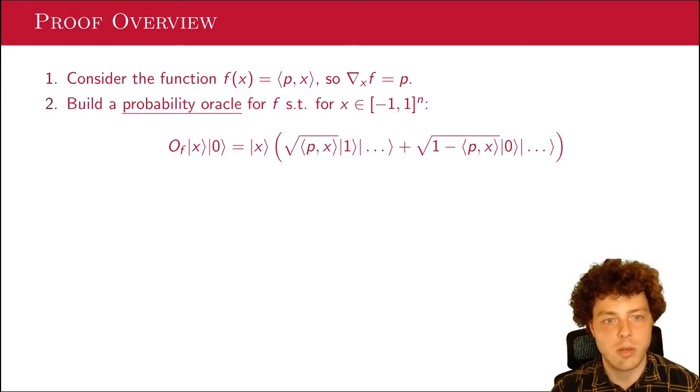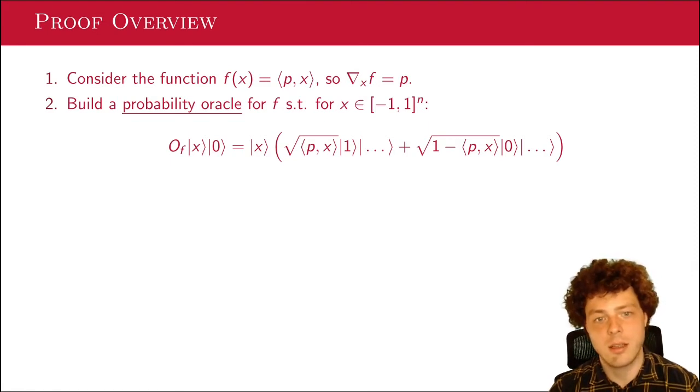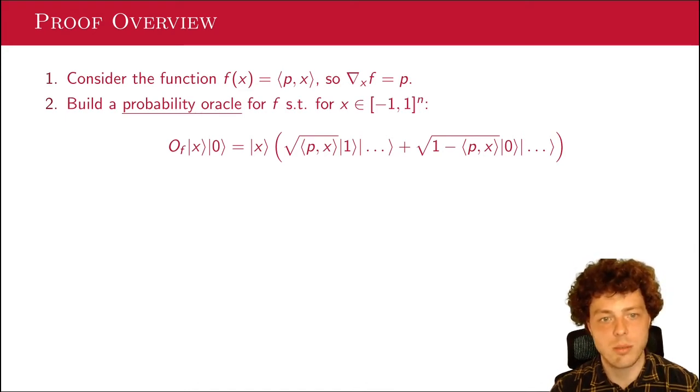So the proof goes like follows roughly. Consider the function f(x), which is just the inner product between P and x. So the gradient of f in terms of x is just P everywhere. And what we'll be doing is estimating the gradient of this function using quantum algorithm. To do so, we first build a probability oracle for f. So such that for every x in a small box around zero, a probability oracle is something that when we apply it to x and ket zero, it actually gives us back x and something in the second register, which when measured would have a probability equal to the function value of returning a one.